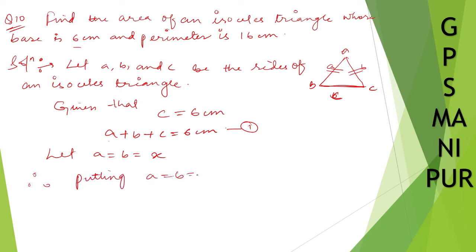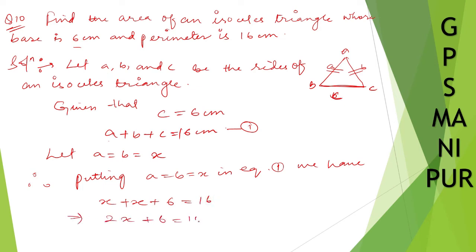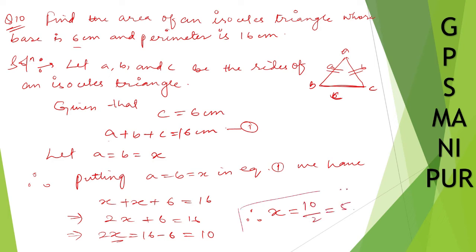Putting A equal to B equal to X in equation one, we have X plus X plus 6 is equal to 16. So 2X plus 6 equals 16. 2X equals 16 minus 6, which is 10. Therefore X equals 10 divided by 2, which is 5. So X is equal to 5, which gives us the value for A and B.